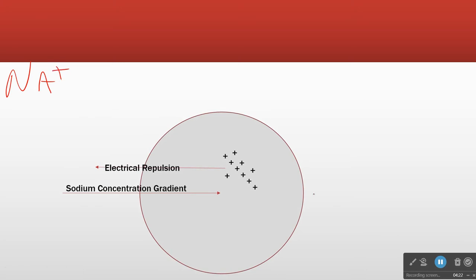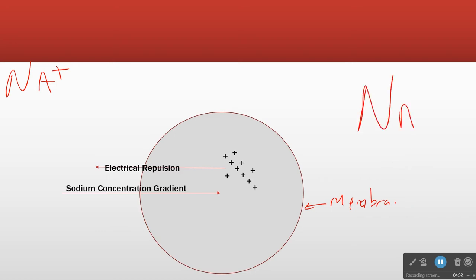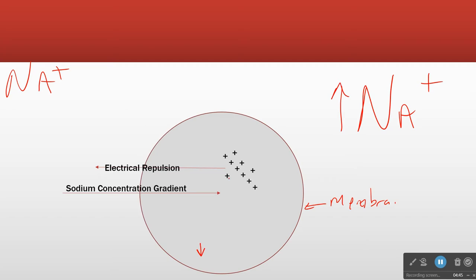So this is our cell, this is our cell membrane. I'm going to draw this really big because the concentration is really high outside. We have a very high concentration of sodium outside the cell, and inside the cell a very low concentration of sodium.